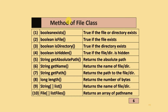Some methods of the File class include: boolean exists(), boolean isFile(), boolean isDirectory(), boolean isHidden(), String getAbsolutePath(), String getName(), String getPath(), long length(), String[] list(), and File[] listFiles().